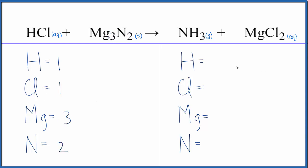On the product side, we have hydrogen, three of those, two chlorines, one magnesium, and then just the one nitrogen.